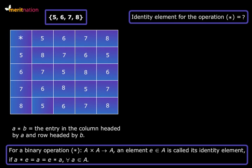Now look at the binary operation table. Let me write down a few expressions there: 5 star 8 that equals 5 that in turn is equal to 8 star 5, 6 star 8 that equals 6 that in turn is equal to 8 star 6.